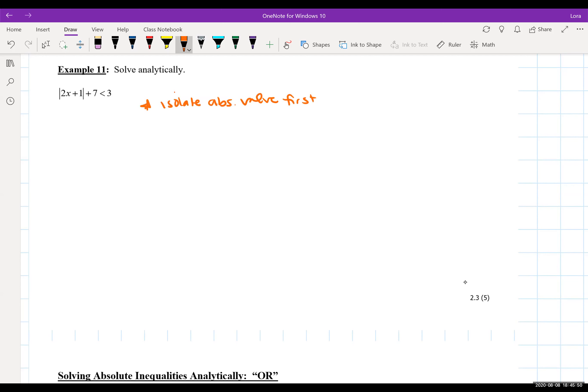We're going to isolate this first and we do this by subtracting seven from both sides. Now when we have this, we have the absolute value of 2x plus one less than three minus seven is negative four.